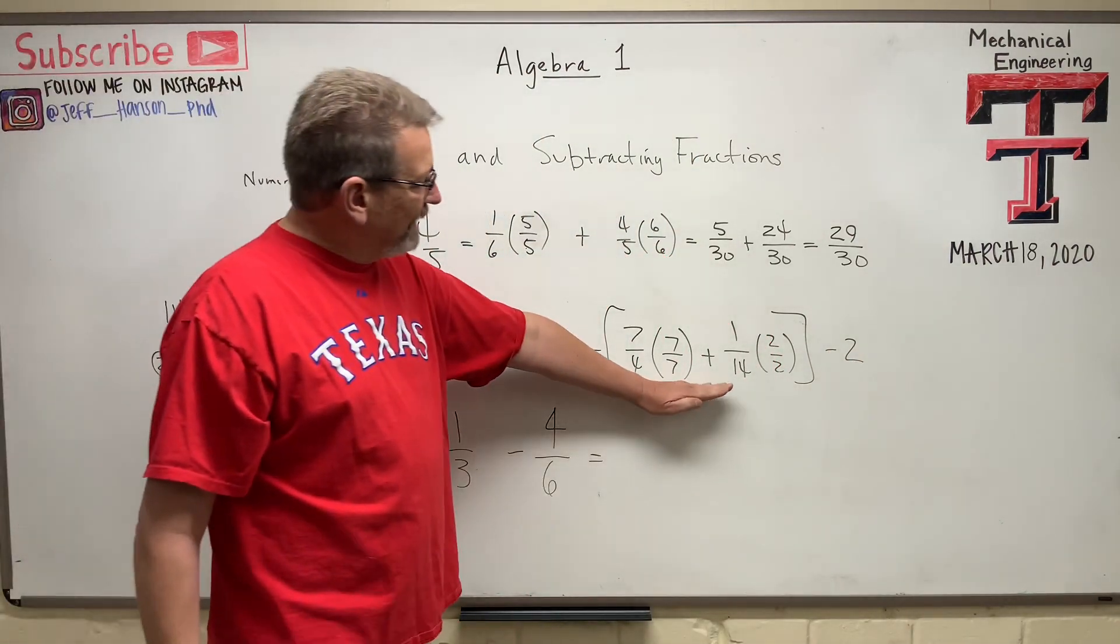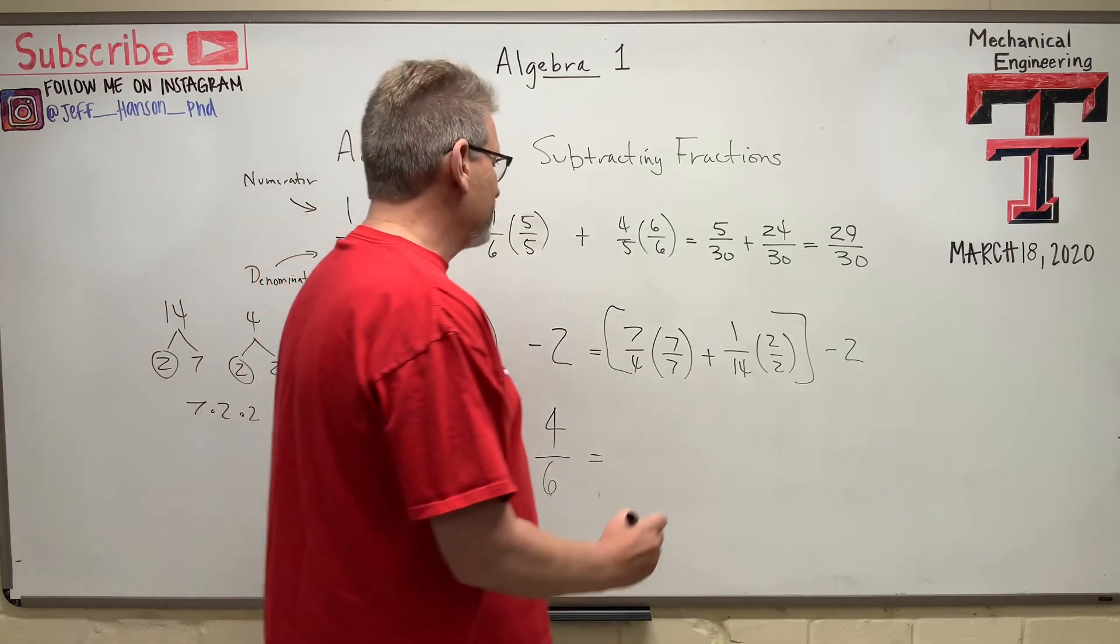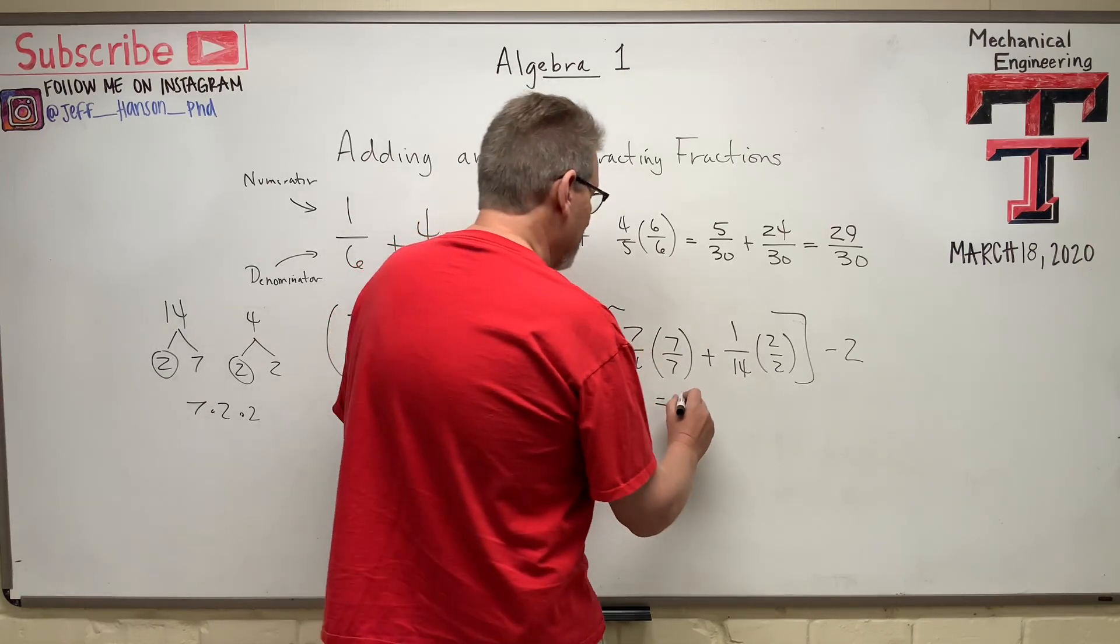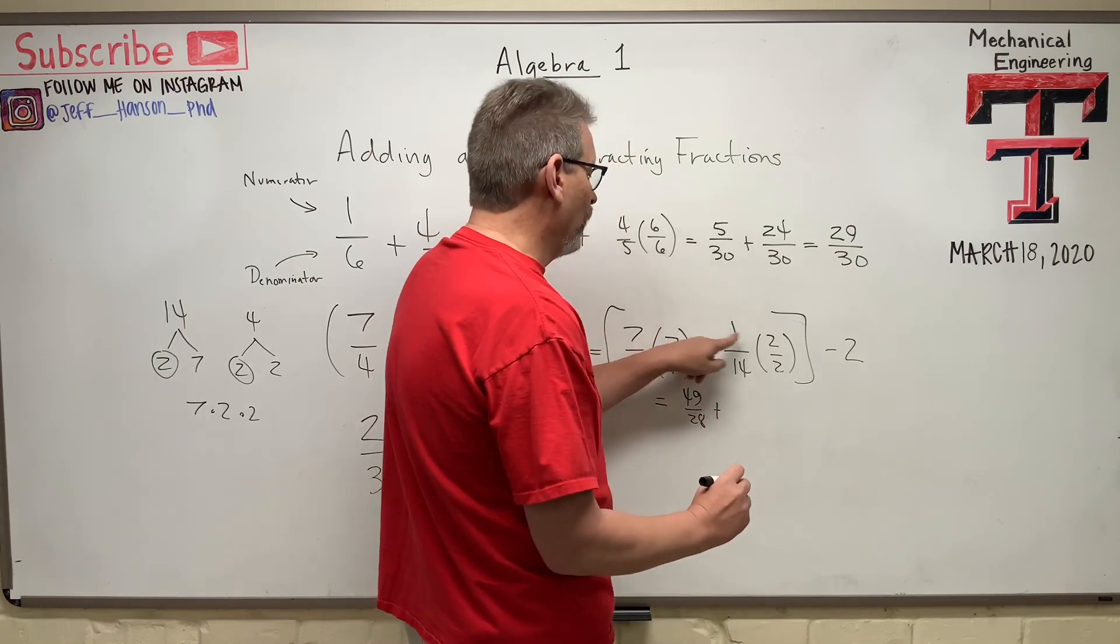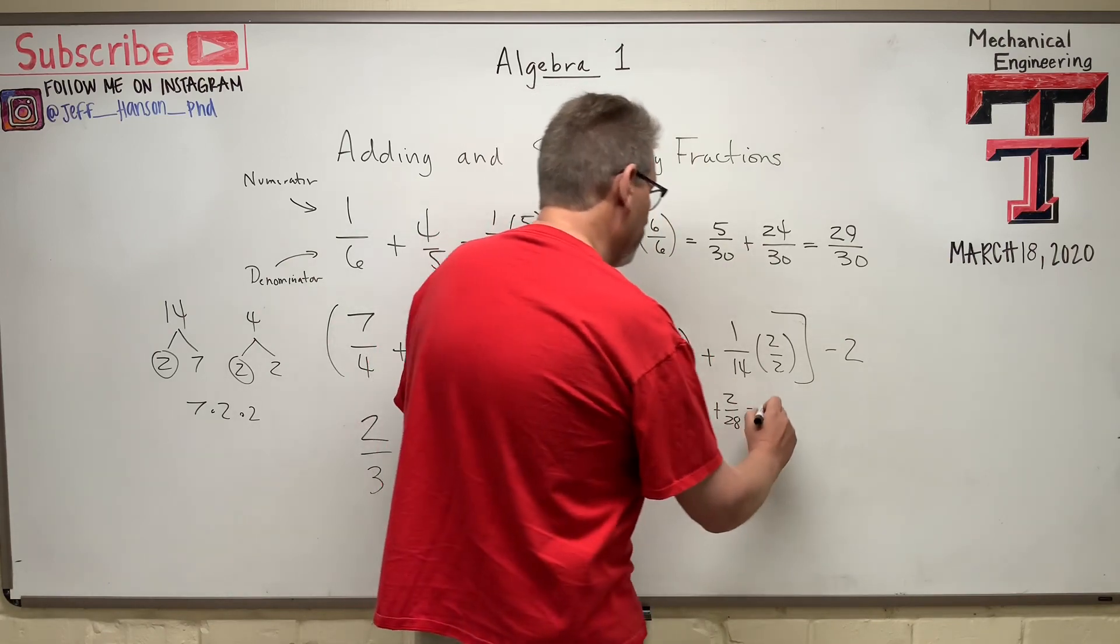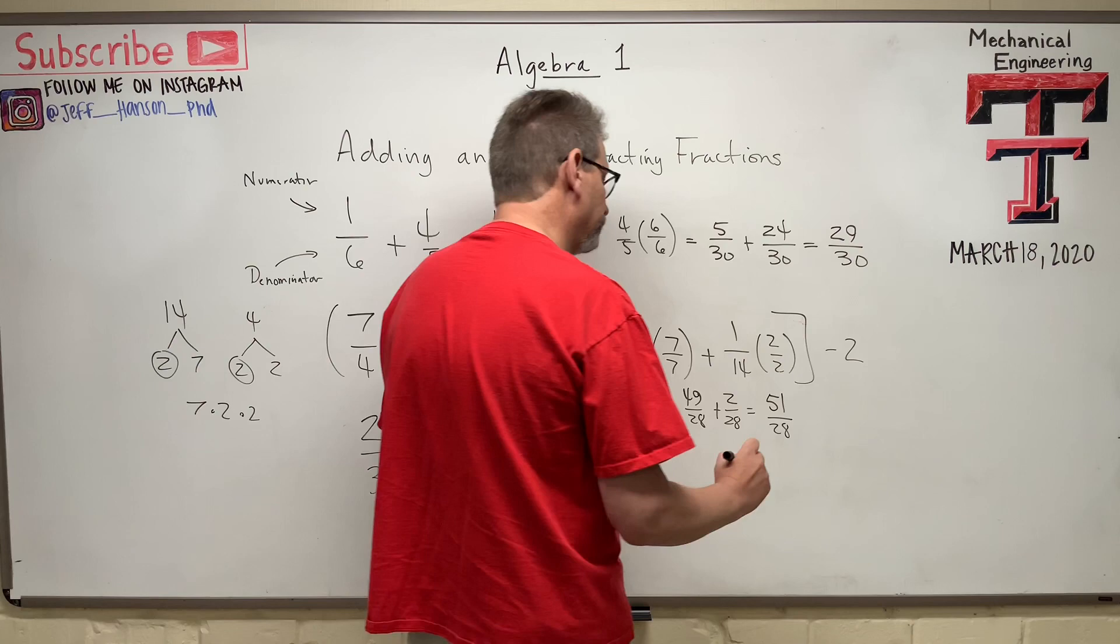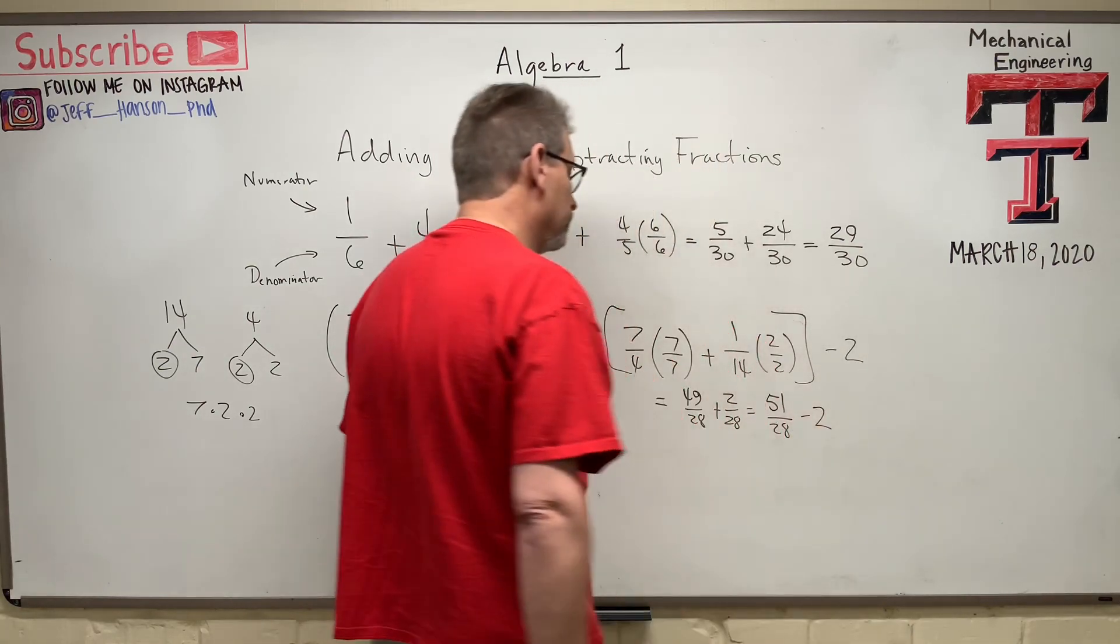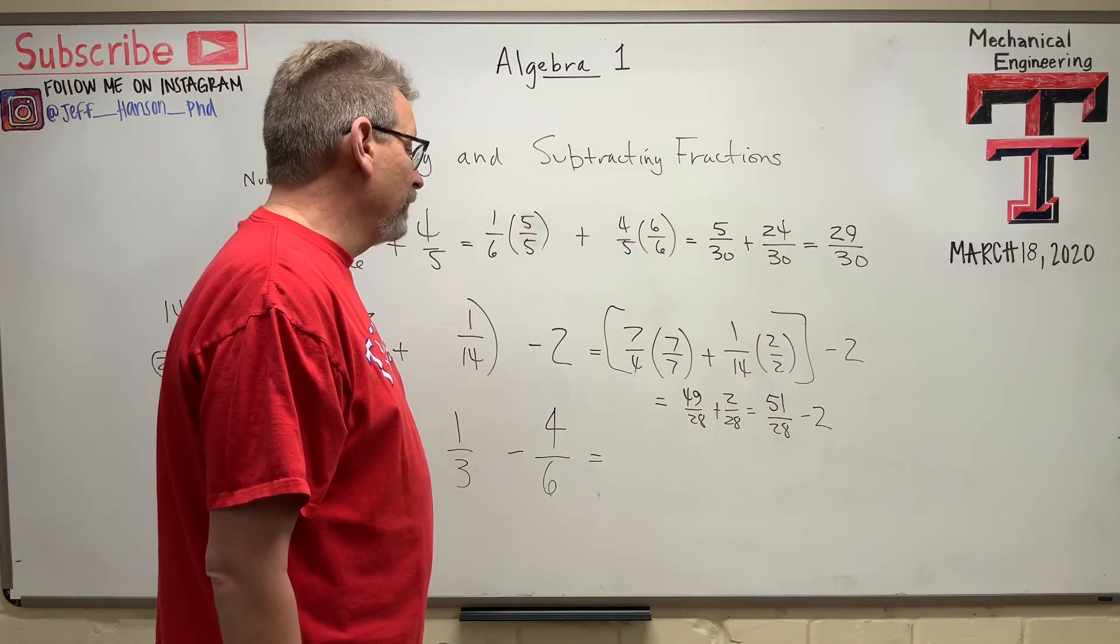So what is going to happen inside the parentheses here? Let's do this multiplication. This is going to give me, 7 times 7 is 49. And then 1 times 2 is just 2, which is going to equal 51 over 28. And then minus 2. Let's see. 51 over 28, does that reduce?